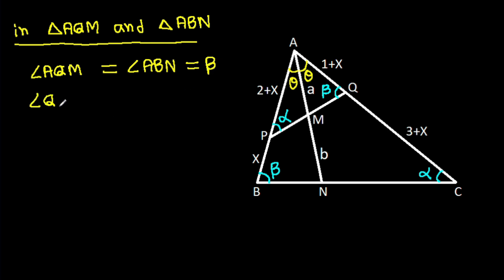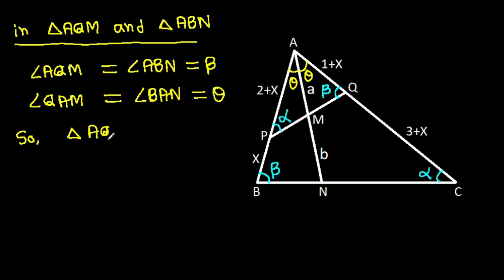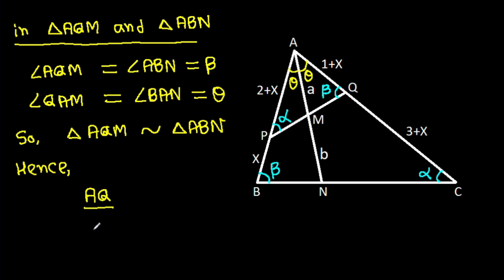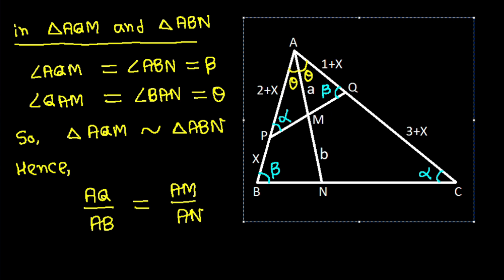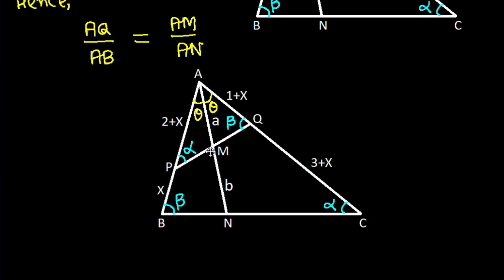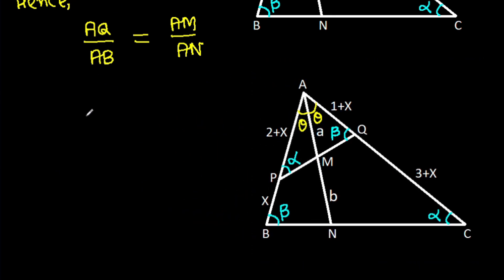Angle AQM is equal to angle ABN, that is beta. And in triangle AQM and triangle ABN, we have angle AQM equal to angle ABN (that is beta), and angle BAN equal to theta. So triangle AQM is similar to triangle ABN.